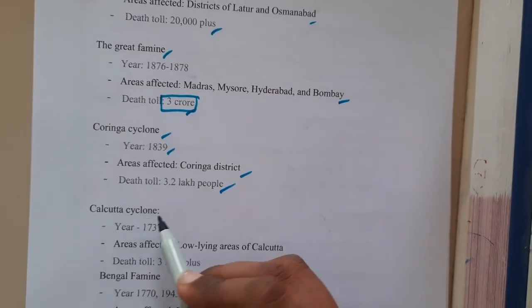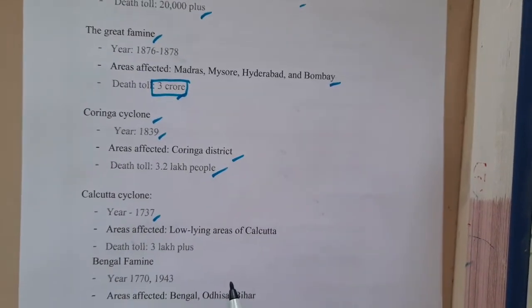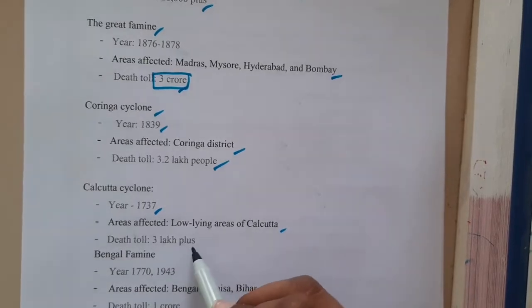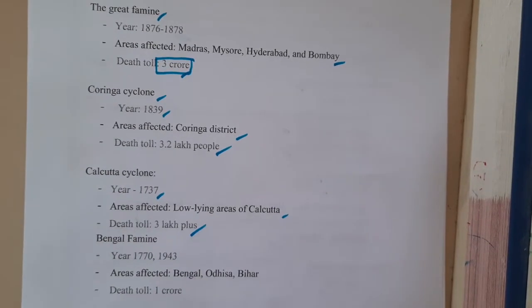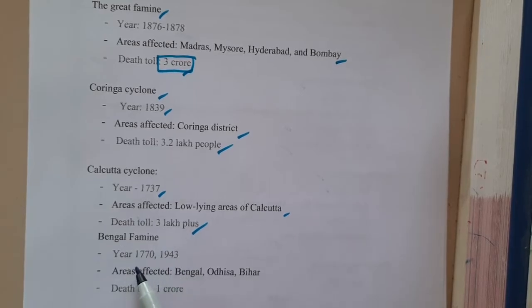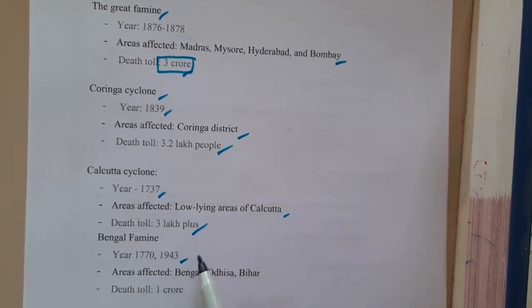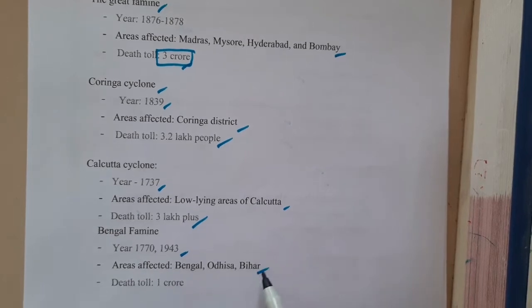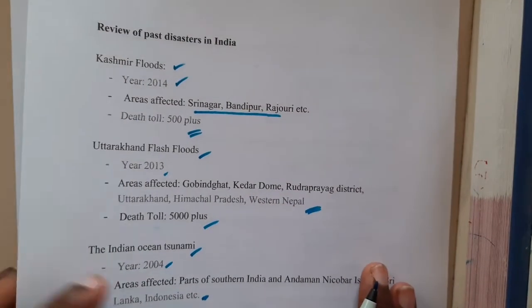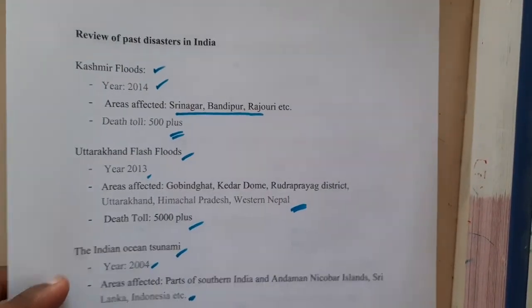The Calcutta cyclone in 1737 resulted in deaths of around 3 lakh. The Bengal famine occurred in 1770 and 1943 in places like Bihar, Bengal, and Orissa, with a total death toll of 1 crore.